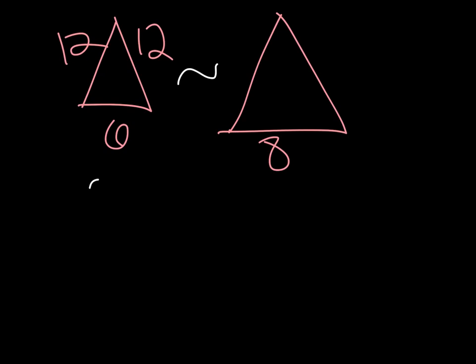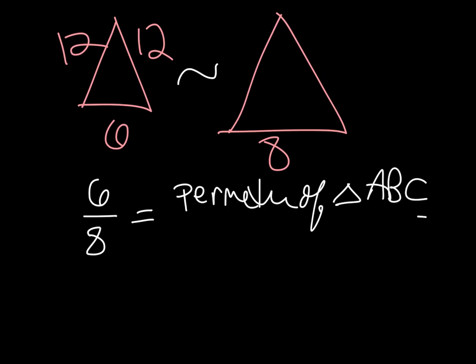So 6 is to 8 as the perimeter of triangle ABC is to the perimeter of triangle PQR.